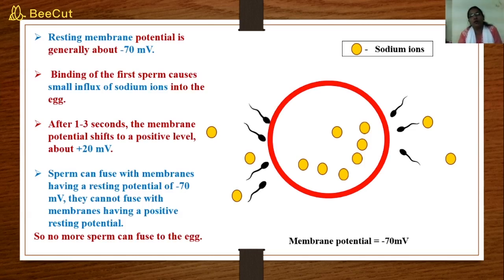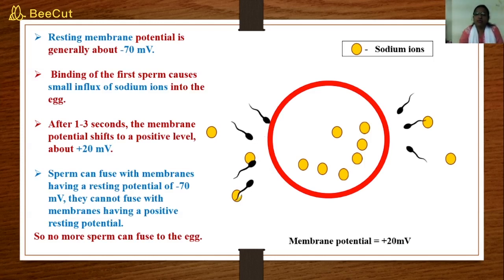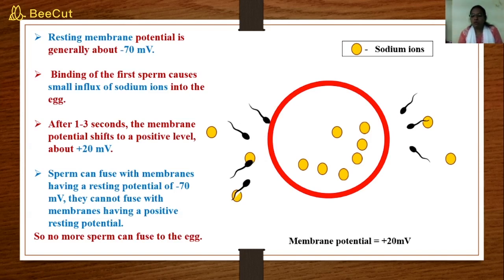The shift towards plus 20 millivolts causes other sperms to move away or not be able to interact with the plasma membrane, thus avoiding polyspermy. This was all about the fast block to polyspermy. Now let's move on to the slow block to polyspermy and why it is required.